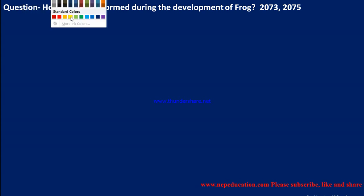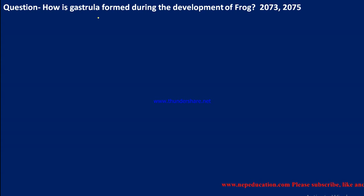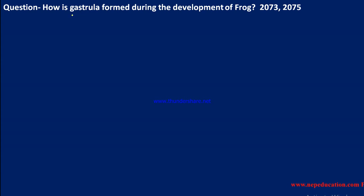This is for Class 12, the 2075 short question. Today I have taken the last question for this video series at my channel. The 2075 exam short question is: how is gastrula formed during the development of frog? We are going to explain gastrulation. This question also appeared in the 2073 exam paper.